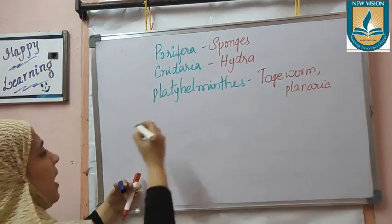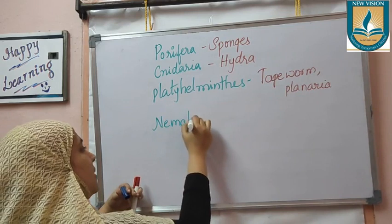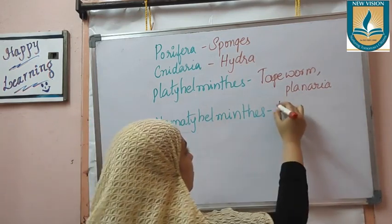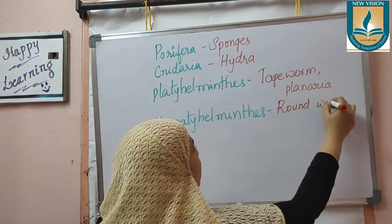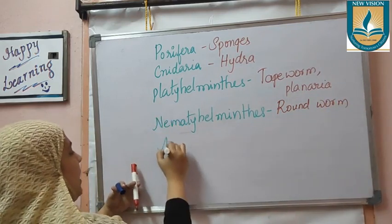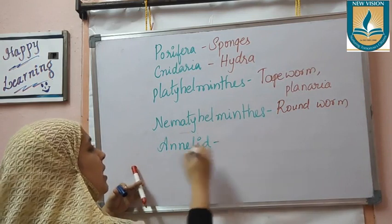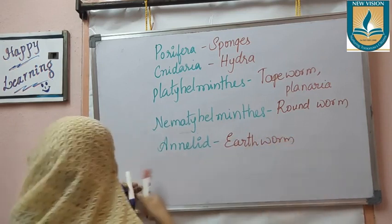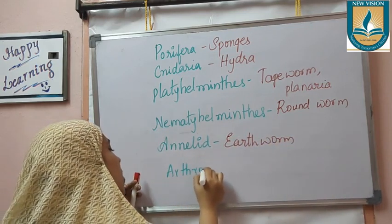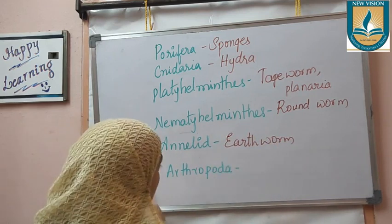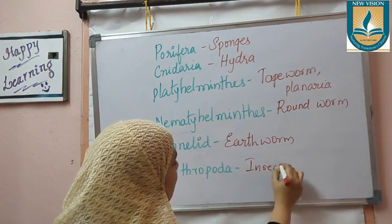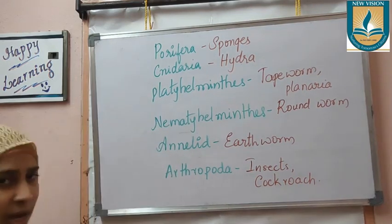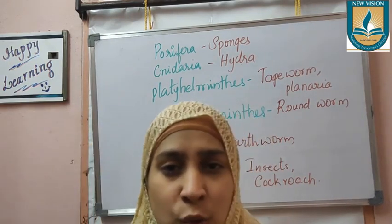After Platyhelminthes, we study Nematohelminthes, where we study roundworm. After this, we study Annelida, where we study earthworm. And then we study Arthropoda, where we study insects — most probably cockroach. So these are what we'll discuss in today's video.